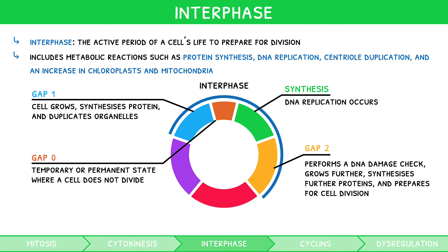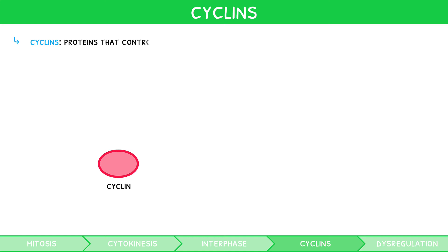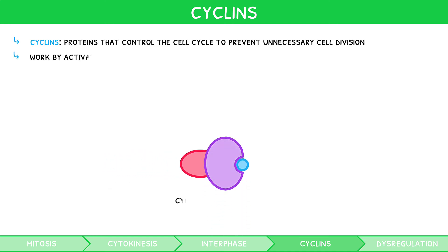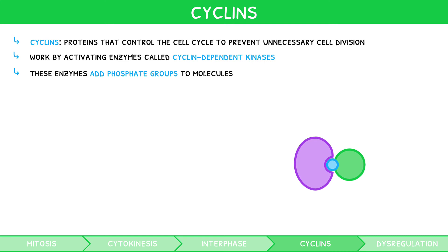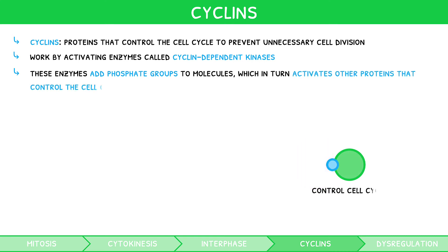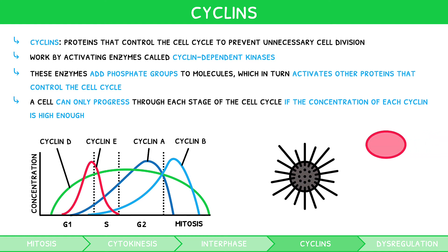The cell cycle is an incredibly important biological sequence and so it must be carefully regulated. This is the role of cyclins, which are proteins that control the cell cycle to prevent unnecessary cell division, as this would be wasteful. Cyclins work by activating enzymes called cyclin-dependent kinases, which add phosphate groups to molecules that in turn activate other proteins controlling the cell cycle. A cell can only progress through each stage if the concentration of each cyclin is high enough. Cyclins were originally discovered during research on large sea urchin eggs, where scientists found a protein with a lifespan of 30 minutes that coincided with the cell cycle.